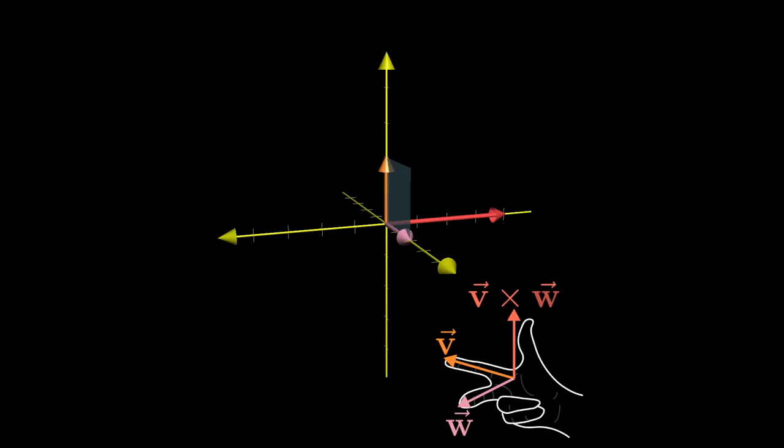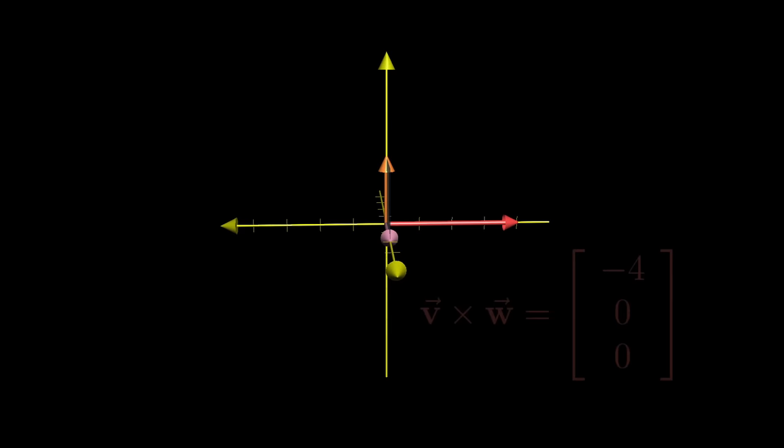Using the right hand rule, their cross product should point in the negative x direction. So the cross product of these two vectors is negative 4 times i hat.